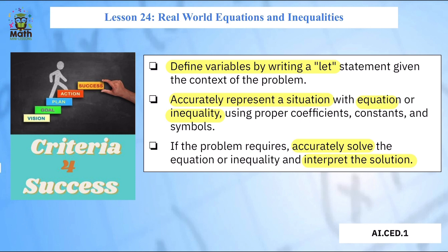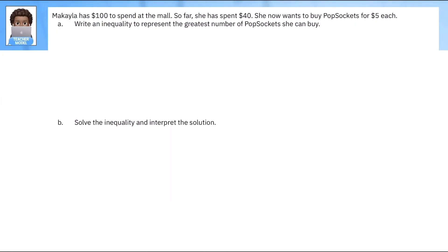So let's get started. Here's our first one. Makayla has $100 to spend at the mall. So far, she spent $40 and now she wants to buy popsockets for $5 each. Let's write an inequality to represent the greatest number of popsockets she can buy.